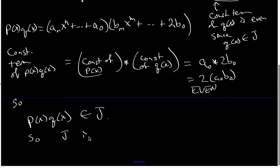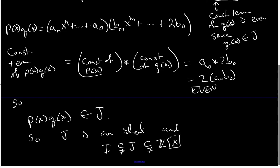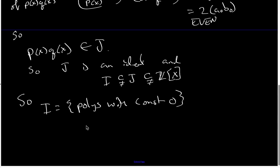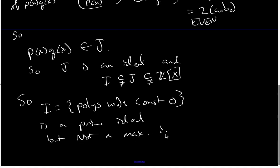So J is an ideal, I is a proper subset of J, and J is clearly a proper subset of Z[X]. That means our set of polynomials with constant term equal to zero is a prime ideal but not a maximal ideal. And that ends this video.